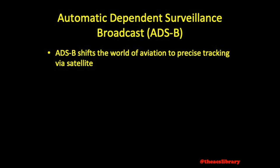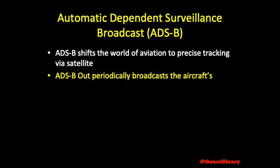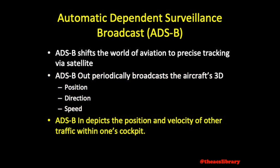ADS-B, or Automatic Dependent Surveillance Broadcast, shifts the world of aviation from ground-based radar surveillance to precise tracking using satellite signals. ADS-B out is a function of an aircraft's onboard avionics that periodically broadcasts the aircraft's 3D position, direction, and speed. ADS-B in describes an aircraft's capability to depict the position and velocity of other traffic within one's aircraft via cockpit display or even electronic flight bag.